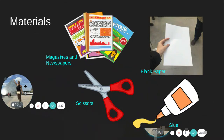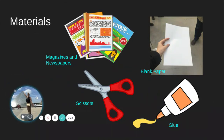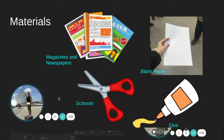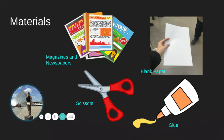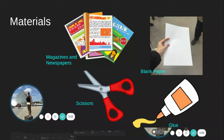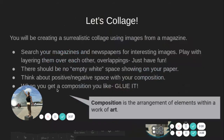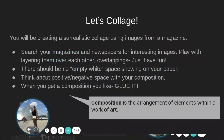Let's get to the project. We're going to make our own surrealist collage. Here are our materials: we need a blank paper for the support, we need magazines and newspapers that we're going to cut apart and assemble together, scissors to cut, and glue to glue. We're going to be creating a surrealist collage using images from a magazine or newspaper.